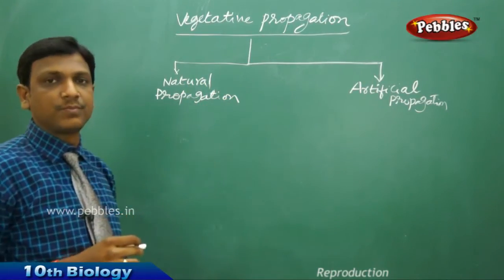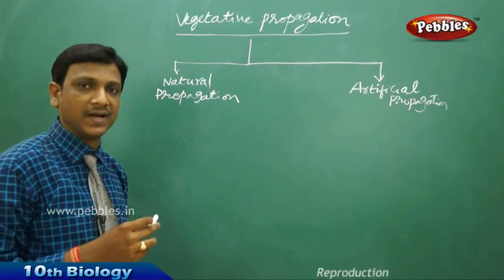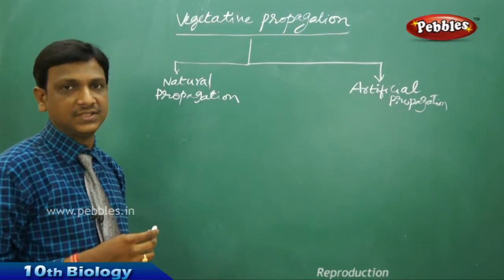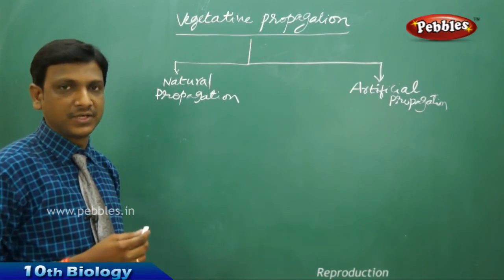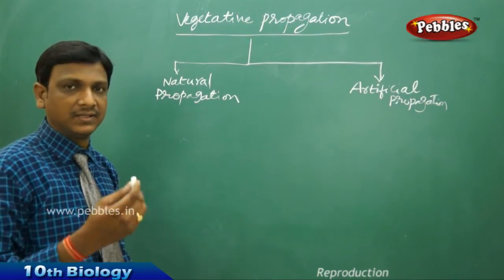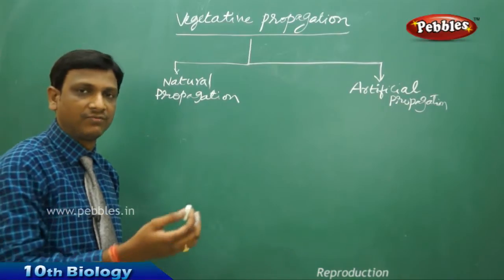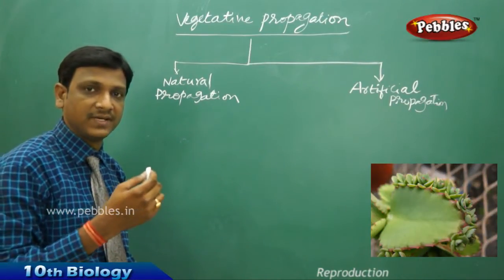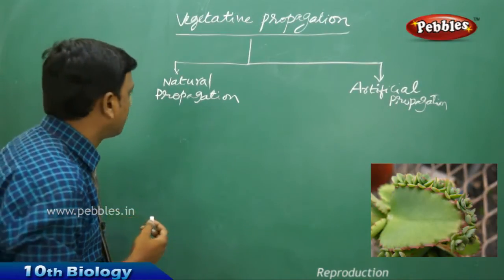In vegetative propagation, the plant is able to produce new plants or the young generation from any of its vegetative parts. The flower is the reproductive part — it consists of stamens and the carpel — but if a plant is able to reproduce from its leaf, root, or stem, we call it vegetative propagation.